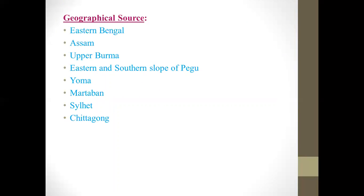Regarding geographical source, the tree is abundantly grown in eastern Bengal, Assam, and upper Burma. It is also distributed along the eastern and southern floors of Pegu, Rangoon, Martaban, and in the forests of Sylhet and Chittagong — these areas are in Bangladesh.